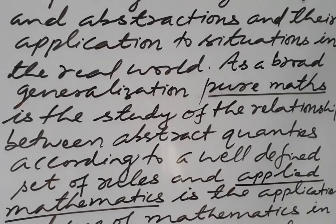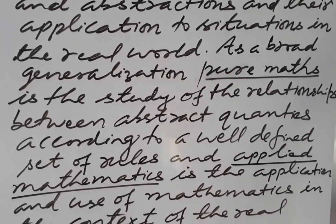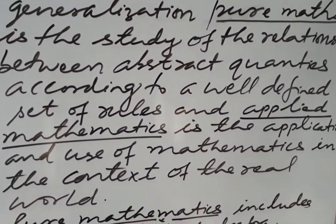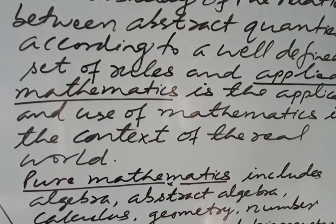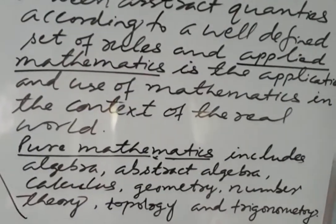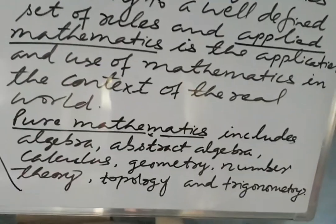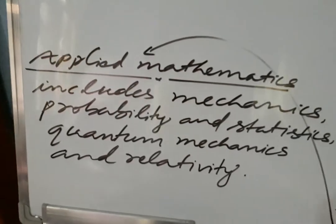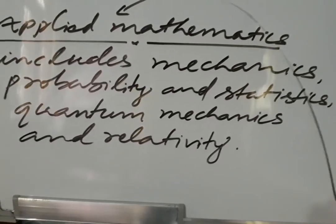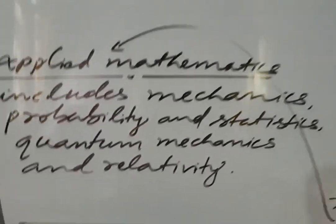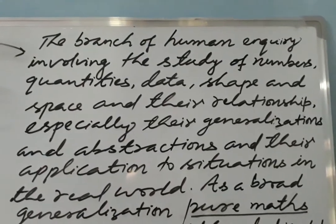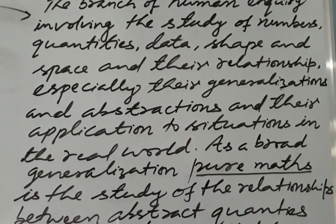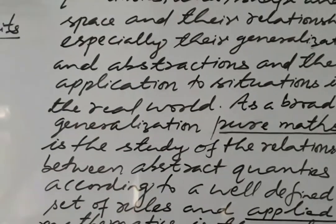As a broad generalization, pure mathematics is the study of relationships between abstract quantities according to a well-defined set of rules, and applied mathematics is the application and use of mathematics in the context of the real world. Pure mathematics includes algebra, abstract algebra, calculus, geometry, number theory, topology, and trigonometry. Applied mathematics includes mechanics, probability and statistics, quantum mechanics, and relativity. There are two types of mathematics: pure mathematics and applied mathematics.